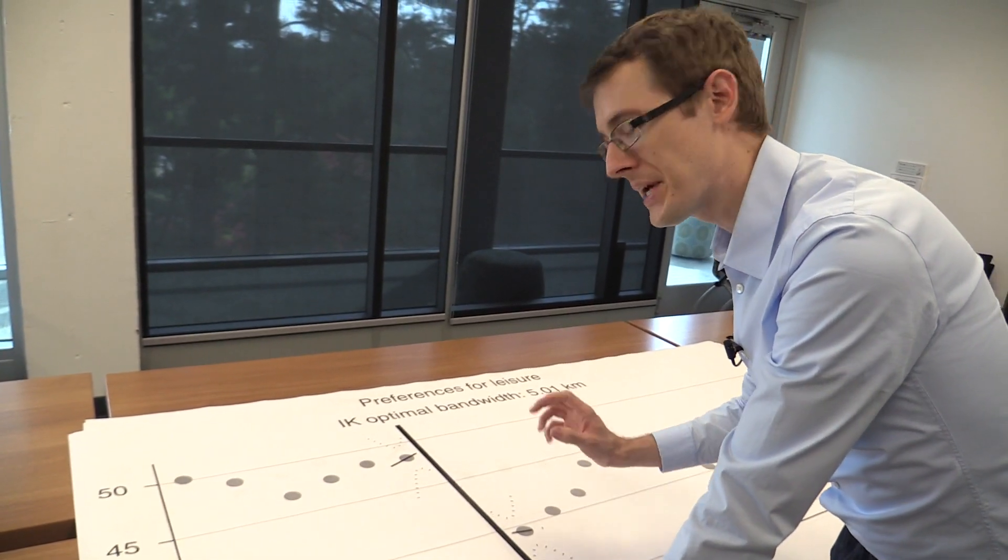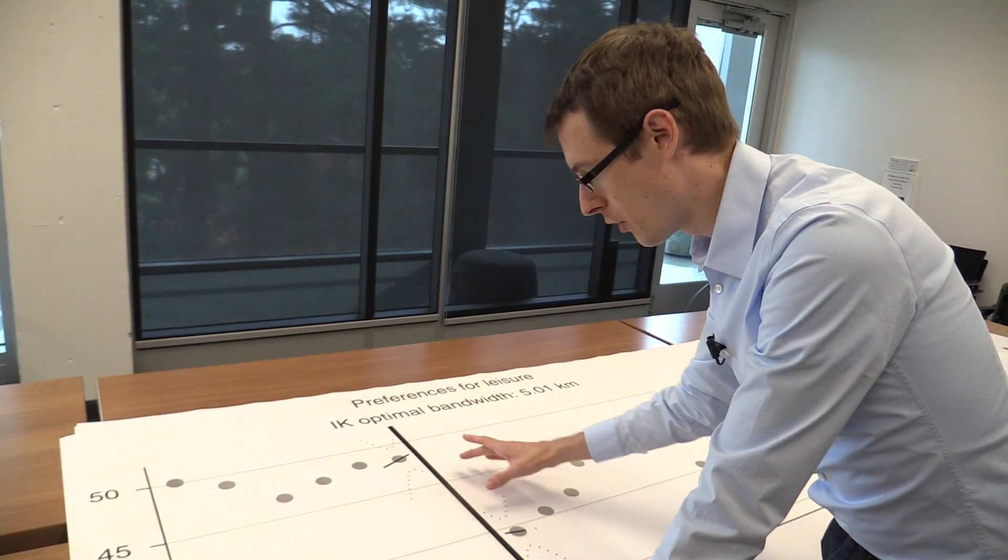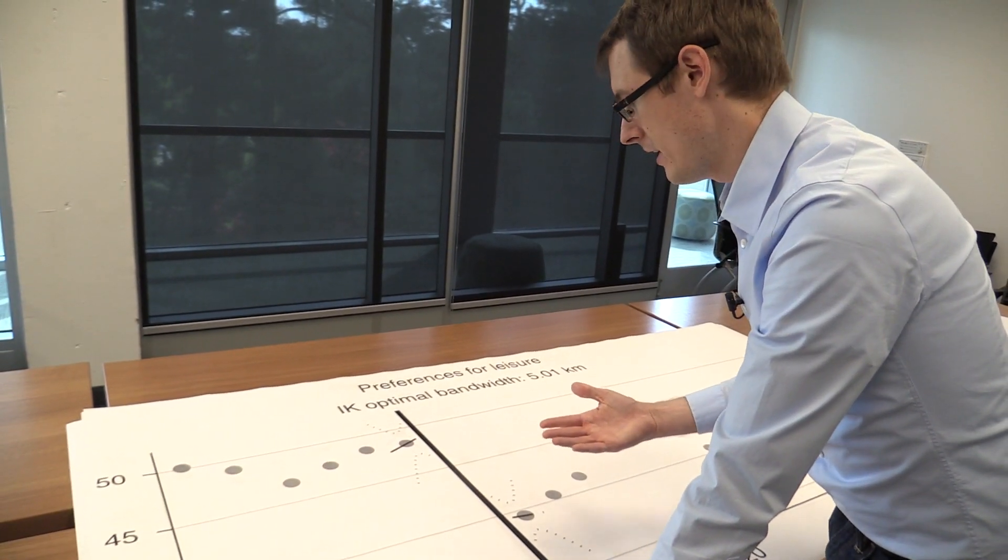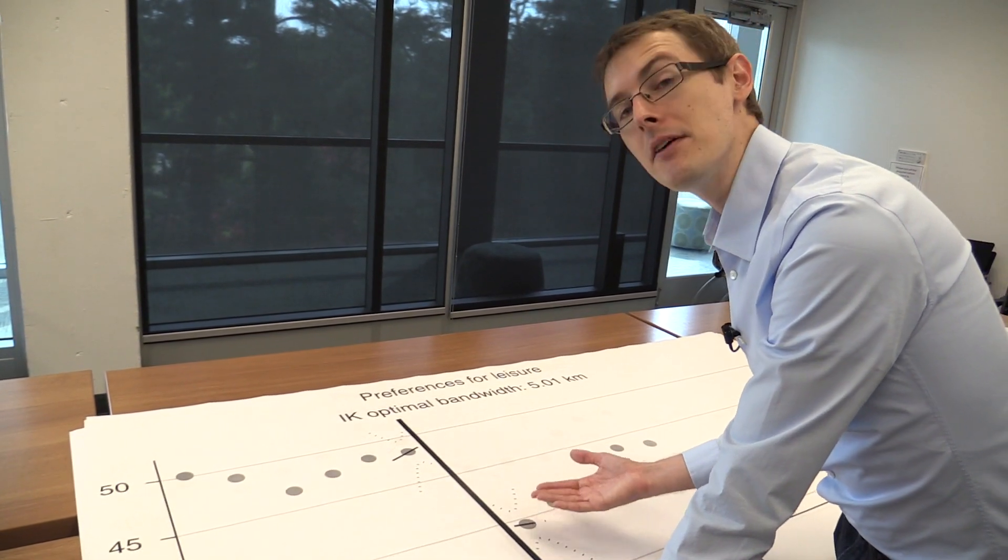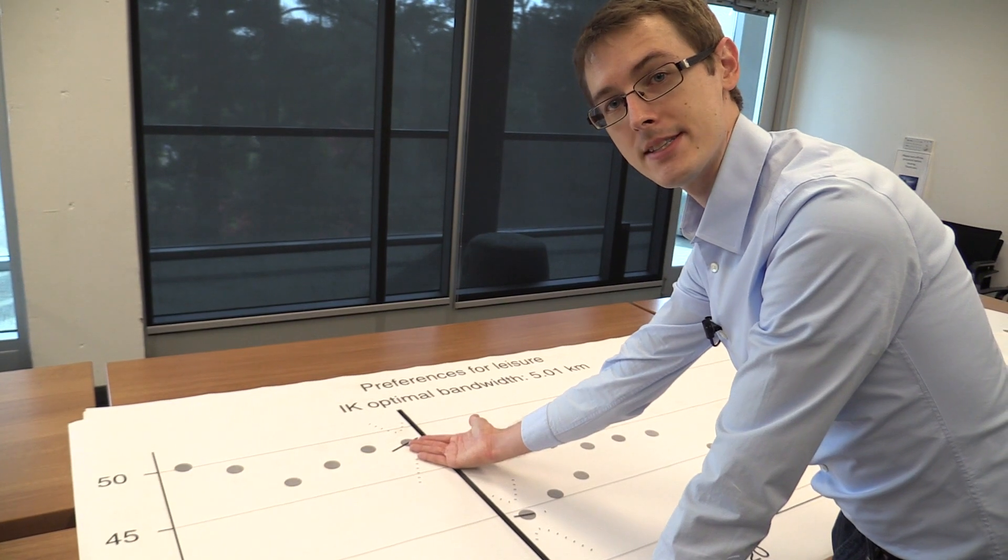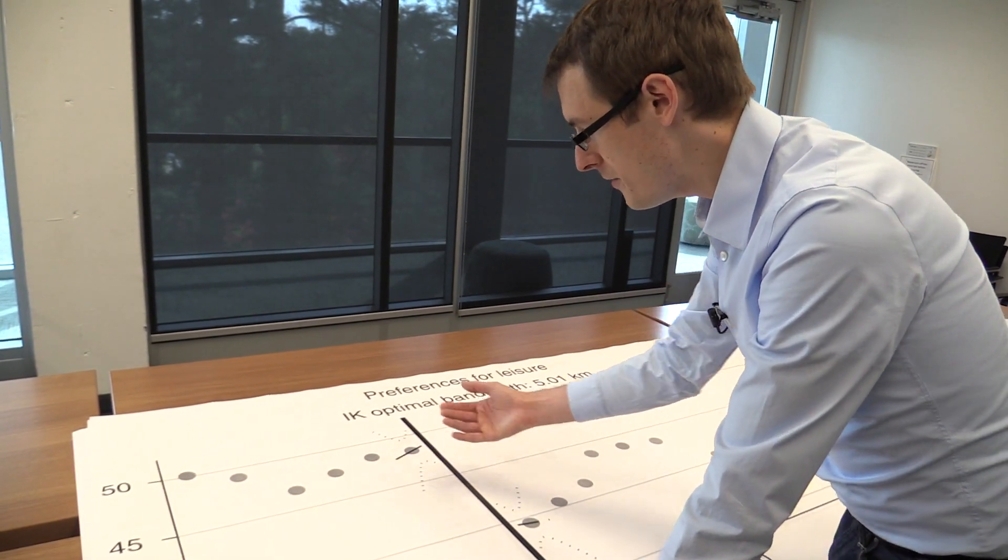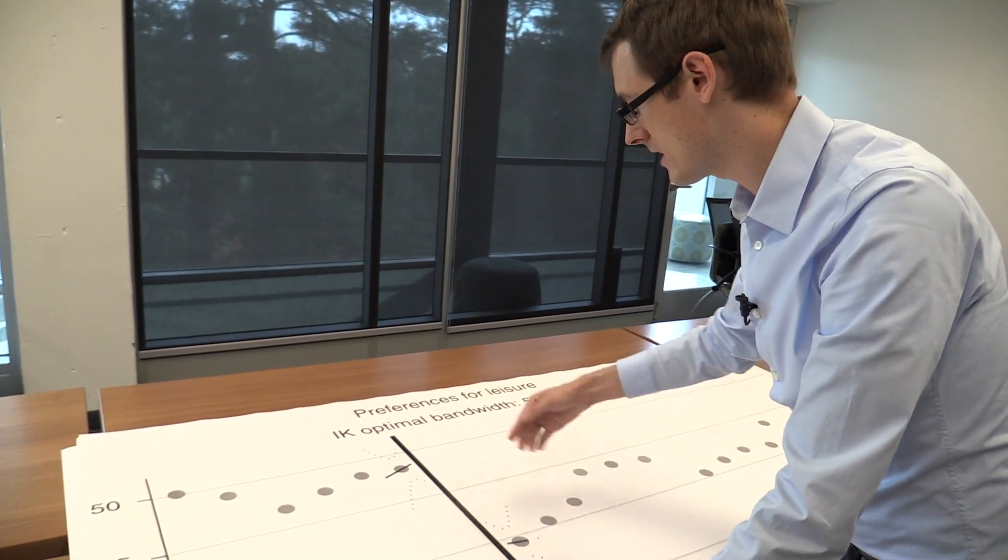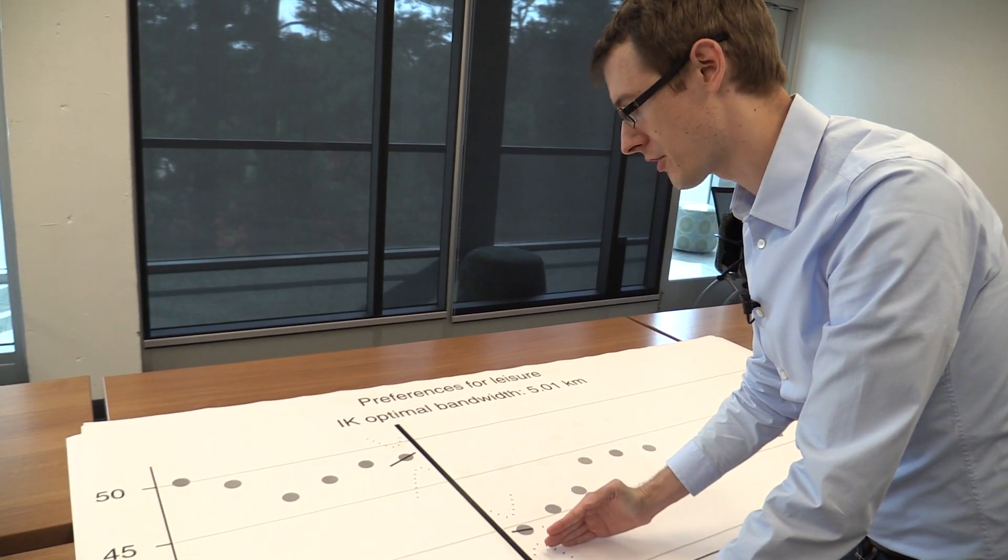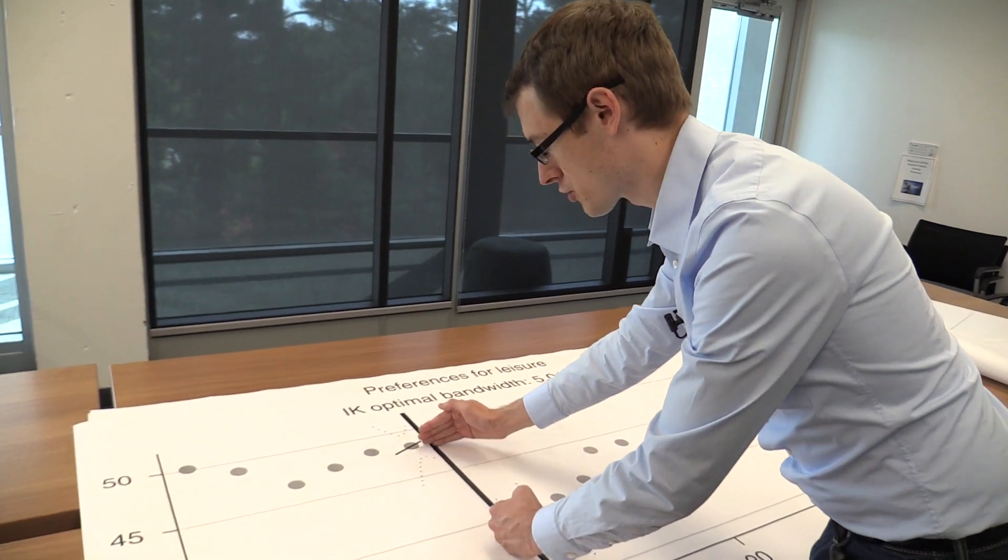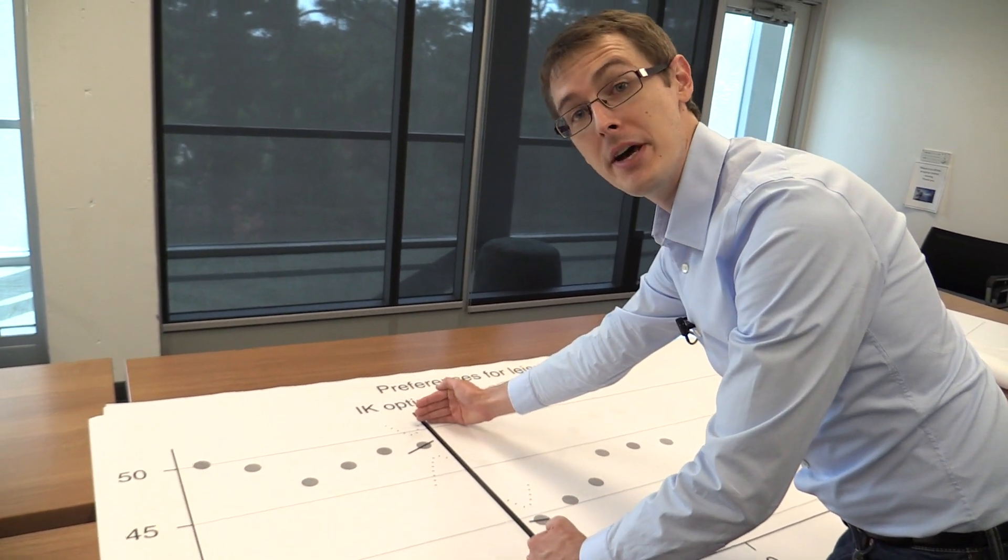Now we have to be careful because this is a fuzzy RDD. So this difference is actually something like an intention to treat number. It's because these municipalities, they have a few Catholics living in them. And these municipalities, they have a few Protestants living in them. So if you think that actually being Protestant does have a true causal effect on lowering your preference for leisure, as is suggested here, then actually the true causal effect is going to be even bigger.